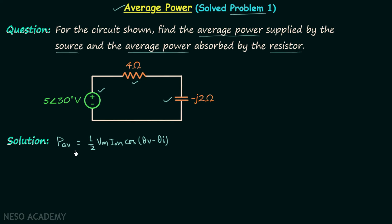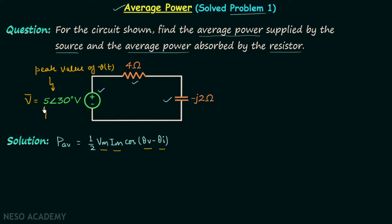In order to find the average power we need the maximum value of the voltage, the maximum value of the current, the phase of the voltage, and the phase of the current. The voltage phasor given in the question corresponds to the peak value of v(t), and therefore this 5 is Vm and this 30° is θv. So we have Vm and we have θv.